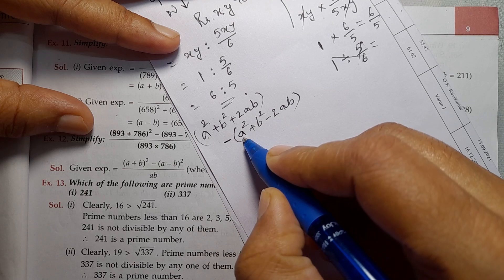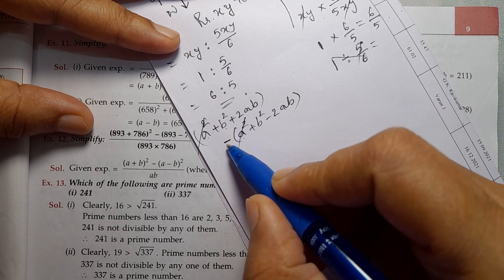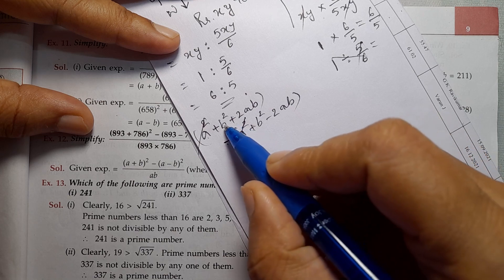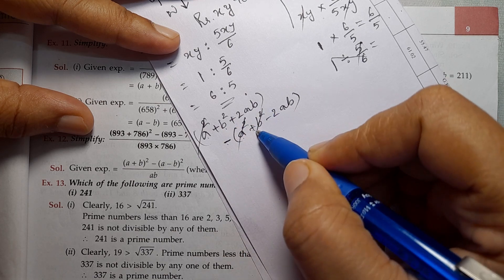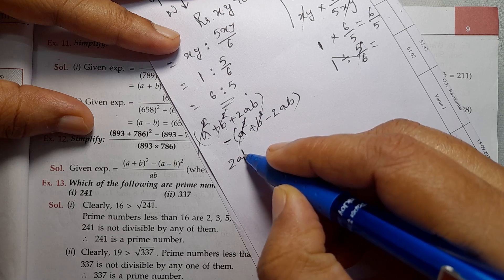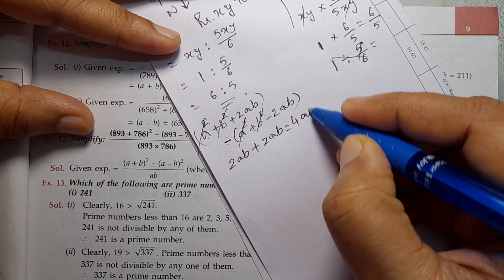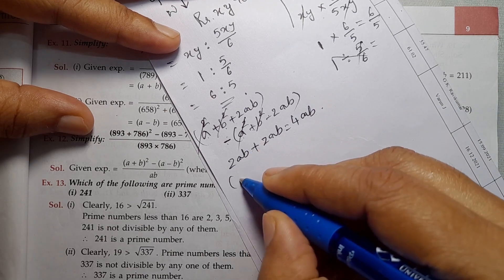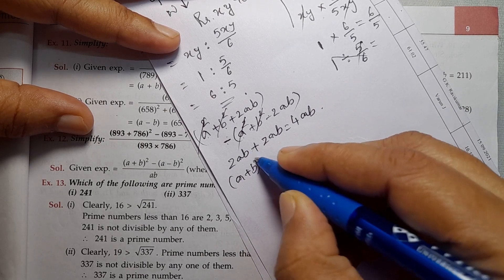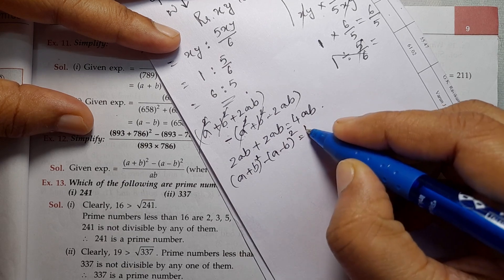A² minus A² gets cancelled. B² terms also cancel. We get 2AB minus negative 2AB, which equals 4AB. So remember, (A + B)² minus (A - B)² equals 4AB.